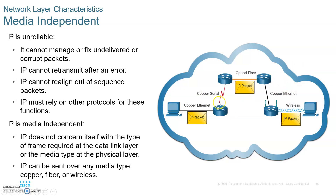Media independent means it doesn't matter if you have a coaxial cable, an optical fiber cable, a copper cable, or wireless — an IP packet can travel on any media. The packet is really encapsulated in a frame: inside a LAN it travels inside an Ethernet frame; on a dedicated copper link it could be a PPP frame; on optical maybe an FDDI frame; wireless uses an 802.11 frame. So packets are media independent because they are encapsulated in the frame, and the frame is the one carrying the packet from one device to the other.